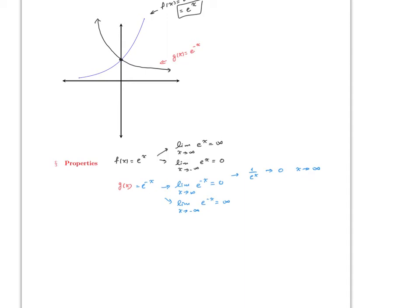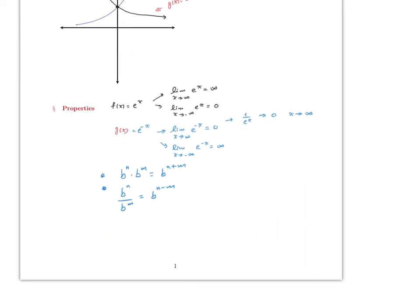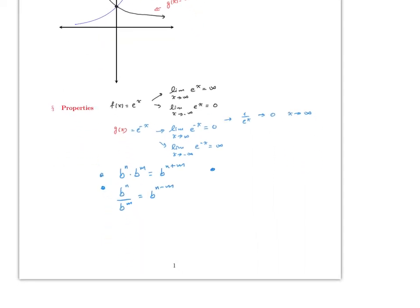Another property, obvious from algebra, which you'll use several times: b^n times b^m equals b^(n+m). And b^n over b^m equals b^(n−m). Finally, b^n to the m equals b^(n·m).